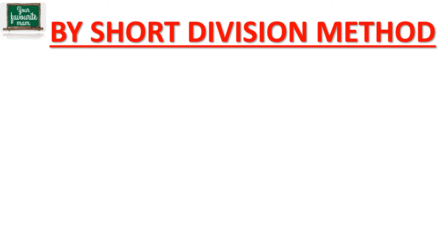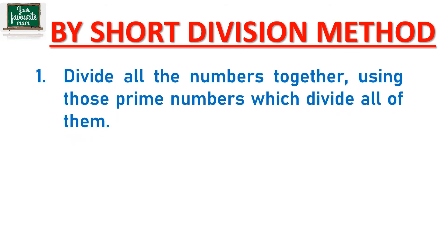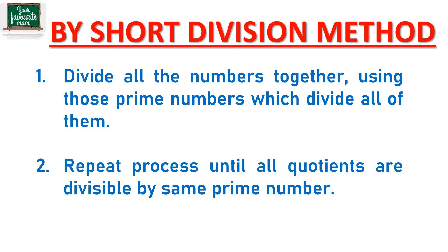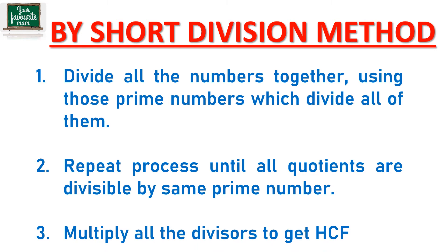That was how we find the HCF using prime factorization method. Now let's talk about finding HCF using the division method, and specifically the short division method. In the short division method, we list all the numbers and divide them together using prime numbers which divide all of the given numbers. We keep dividing until we can no longer find a common prime divisor, then we multiply all the divisors to get the HCF.